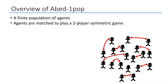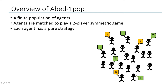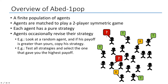Going back to a-bet: our agents are going to play a two-player symmetric game like the one we've just seen. At any point in time each agent has a pure strategy — in our example, keep or transfer the money. Agents in a-bet also have the opportunity to revise their strategy from time to time. A-bet implements many protocols: one example would be to look at a random agent and, if his payoff is greater than yours, copy his strategy. Another possibility would be to test all strategies and select the one that gave you the highest payoff.